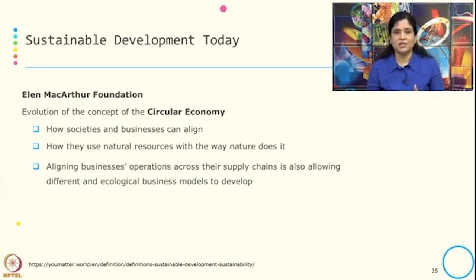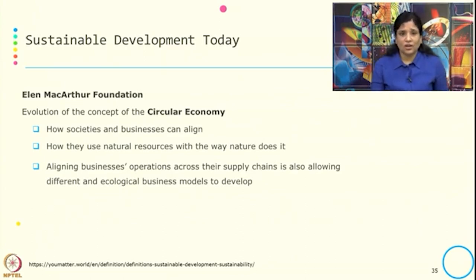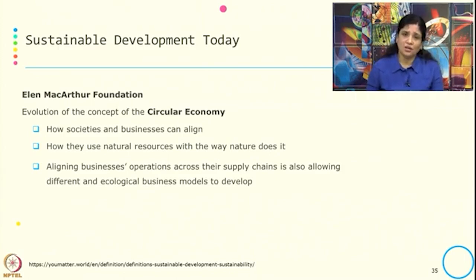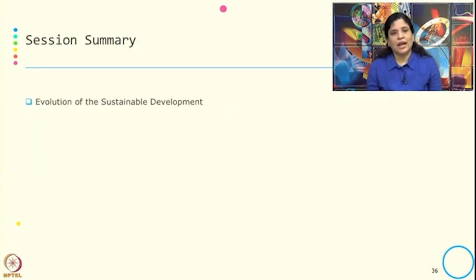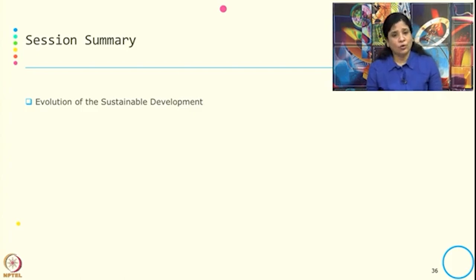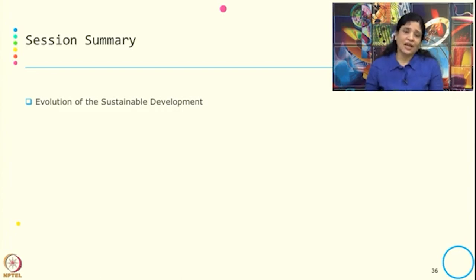The newest concept is the circular economy, introduced by the MacArthur Foundation. It addresses how society and business can align in using natural resources the way nature does. Aligning business operations across the supply chain allows different ecological business models to develop. This captures how sustainable development has evolved — from industrial revolution activities and their negative impact, right through to circular economy and best business practices to achieve sustainable development.